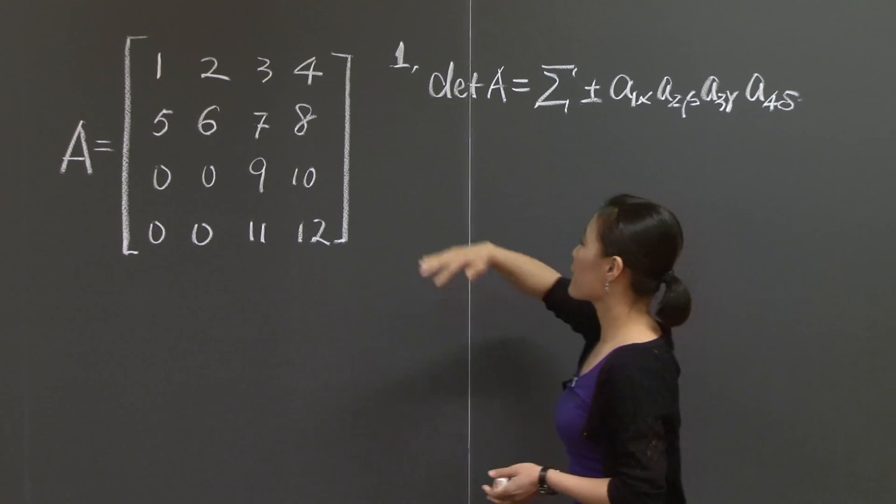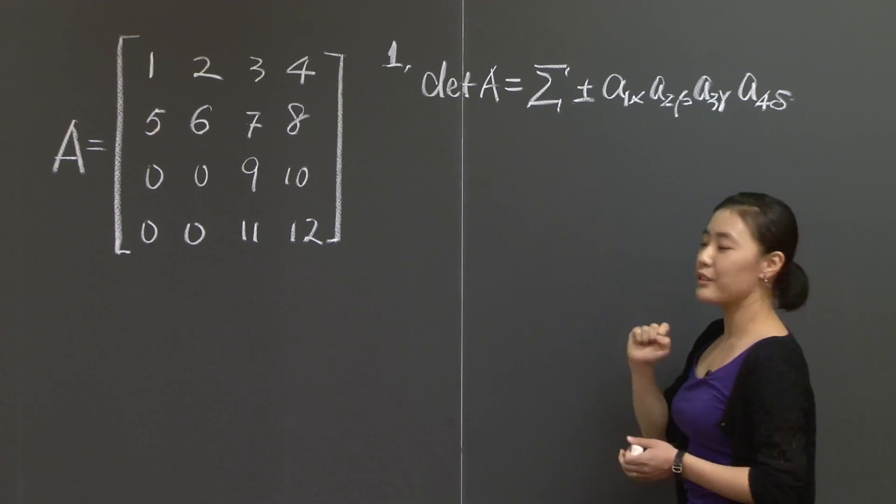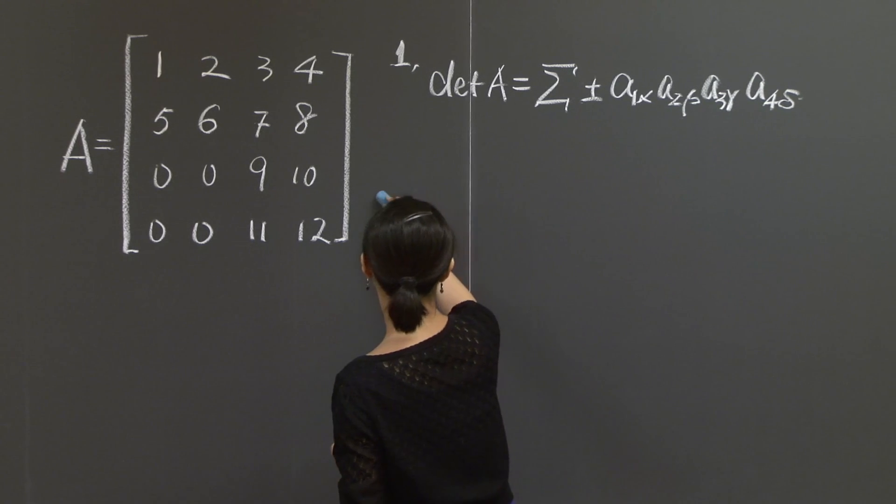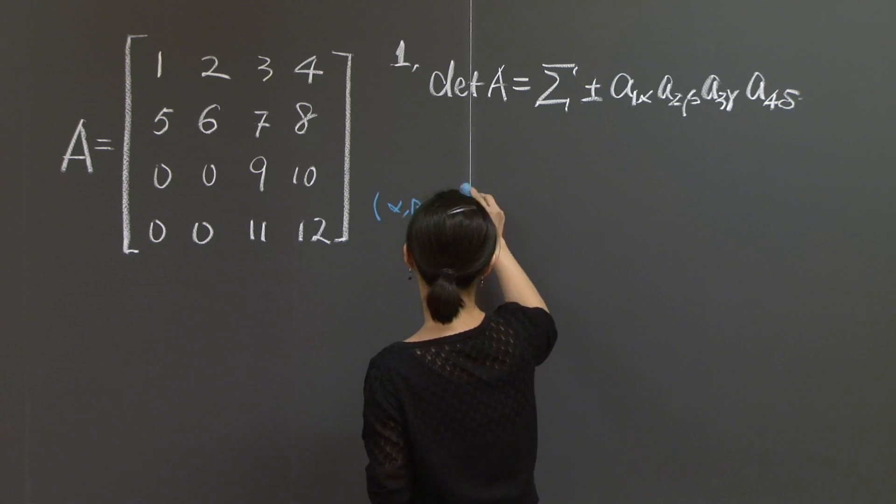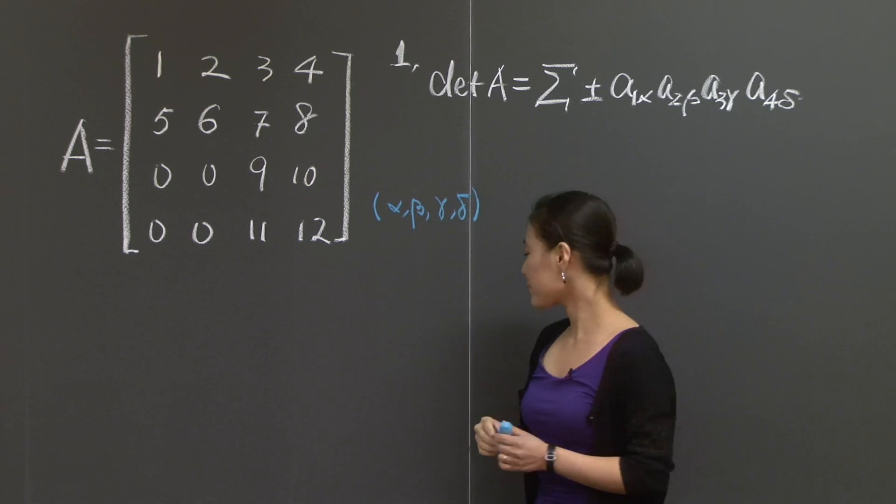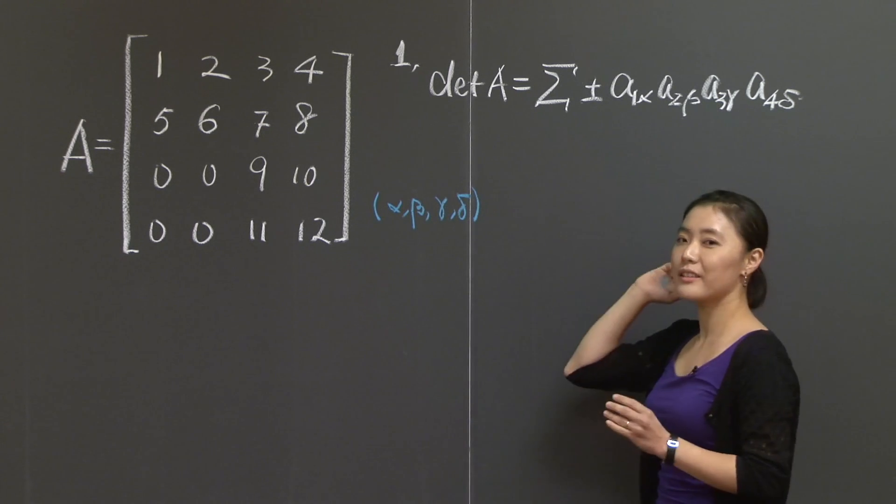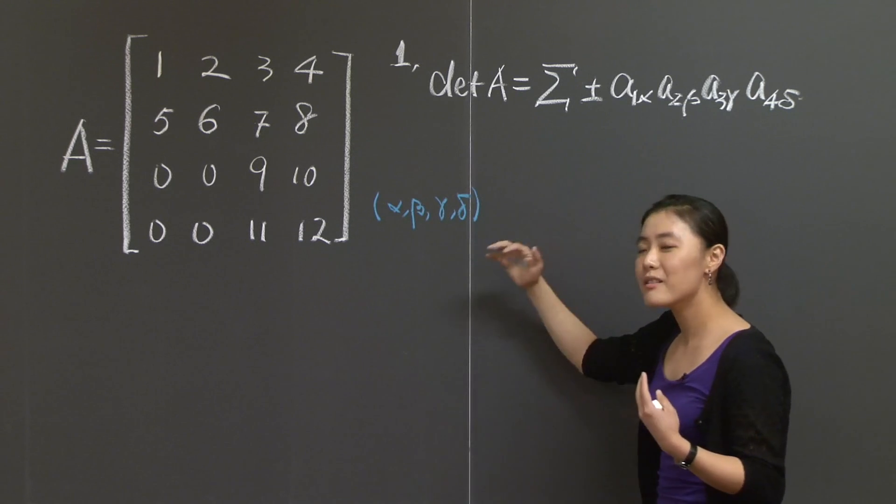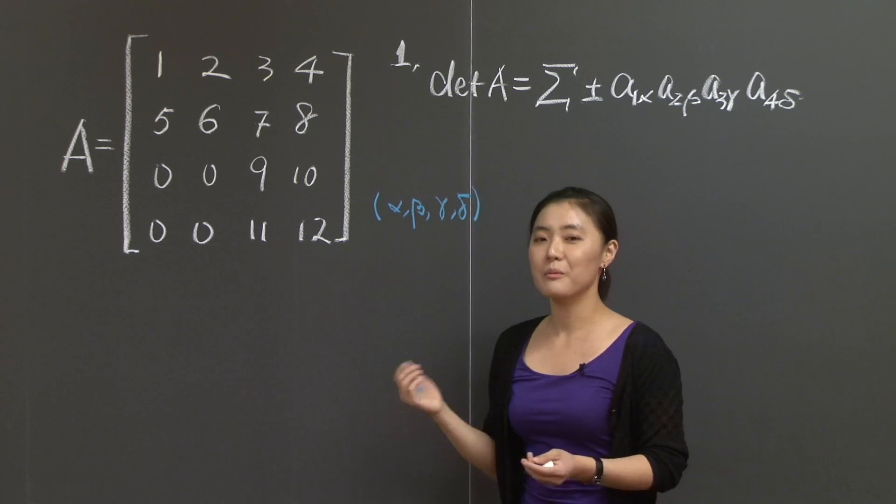The determinant of A is equal to a big summation of plus or minus A1α, A2β, A3γ, and A4δ. What I'm doing here is I choose one entry from each row with the columns being all different. In other words, if I take this column numbers down, α, β, γ, and δ, I want this to be a permutation of numbers 1, 2, 3, 4. So how would you do it? If you follow this order, you may want to start with the first row and go through all the possibilities.